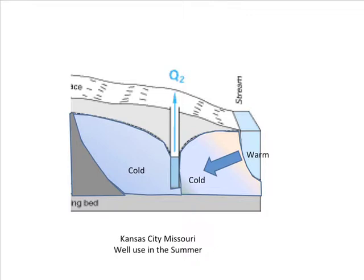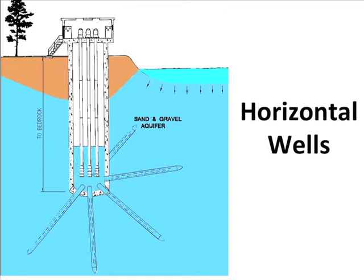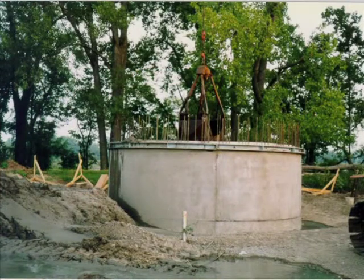There's another type of well that's become popular called a horizontal collector well — named for the horizontal laterals that are projected out under the river and along the river. It consists of a concrete caisson that extends down to bedrock for a couple hundred feet or so. The laterals are then pushed out, and after that's done, they build a pump house on top with pumps to pump the water out for the water supply.